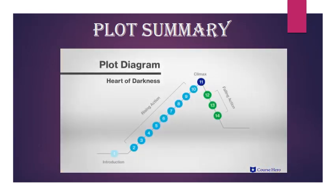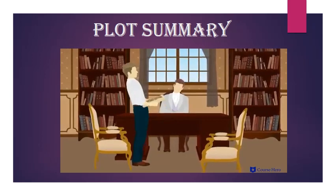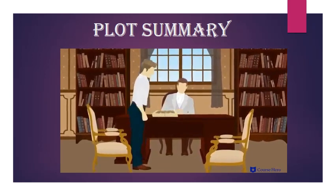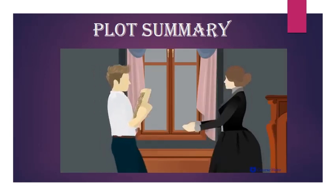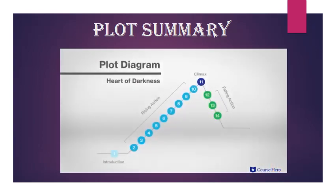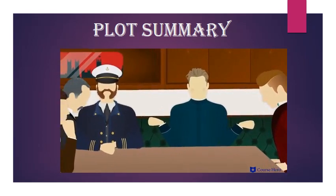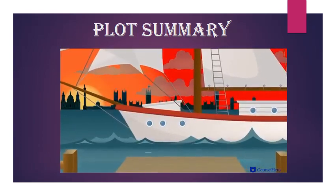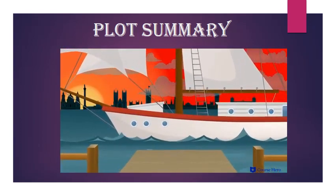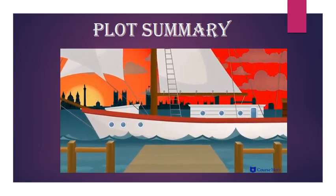In the falling action, Marlow delivers Kurtz's report to a journalist for publication, and his papers to the fiancé Kurtz left behind in Europe. And in the resolution, we come to the end of Marlow's tale, and the action returns to the five friends on the yacht. The Thames is flowing under an overcast sky into the heart of an immense darkness.